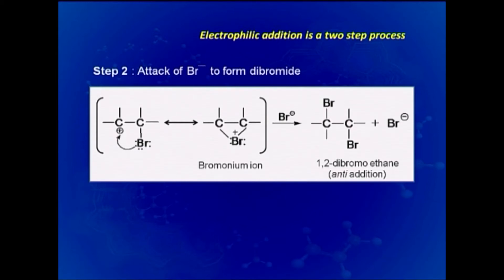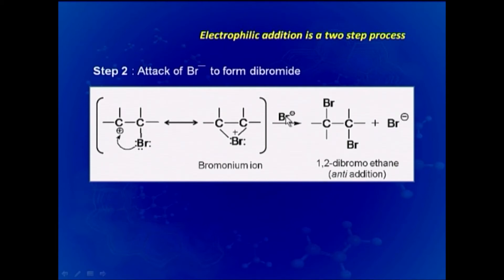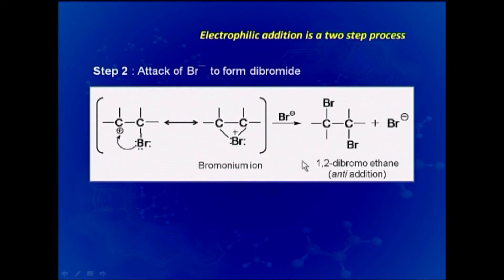The two species — one where carbon bears positive charge and one where bromine has donated its electron pair and bears positive charge — are canonical resonating forms, stabilizing the initially produced carbocation. This is the bromonium ion. On this species, the nucleophile present — Br minus, Cl minus, NO3 minus, etc. — attacks to give the corresponding product, such as 1,2-dibromoethane, with the two bromines anti to each other.